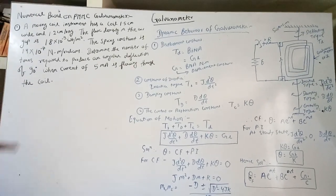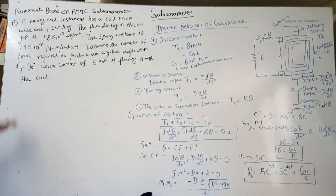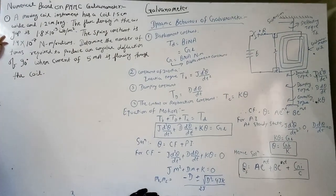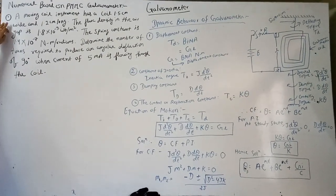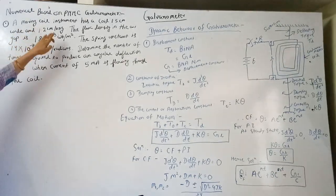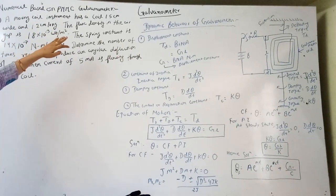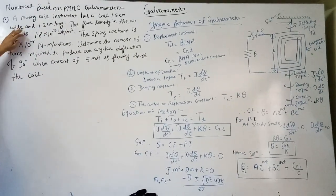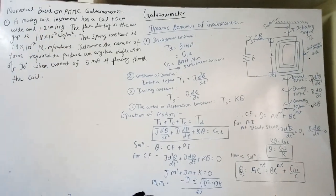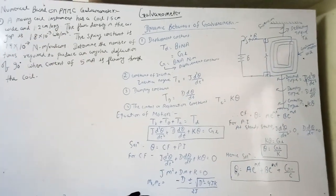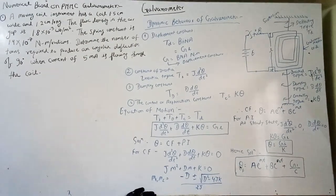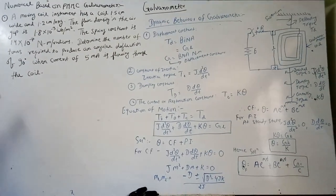So we can solve it — it is a very simple numerical if you have read this. Read the question. A moving coil instrument has a coil 1.5 cm wide and 1.2 cm long. While reading this, you can write down the given values.